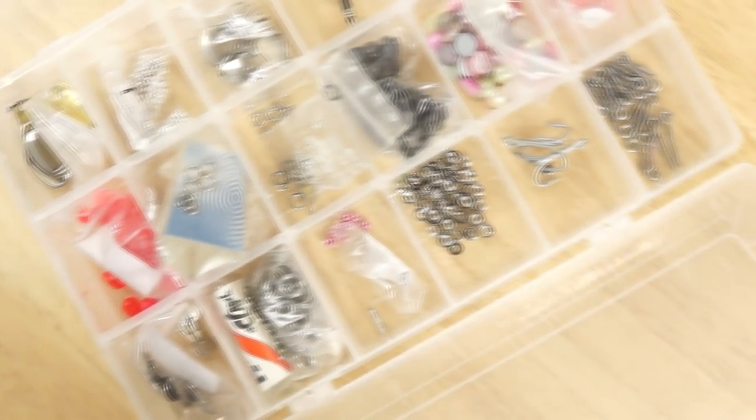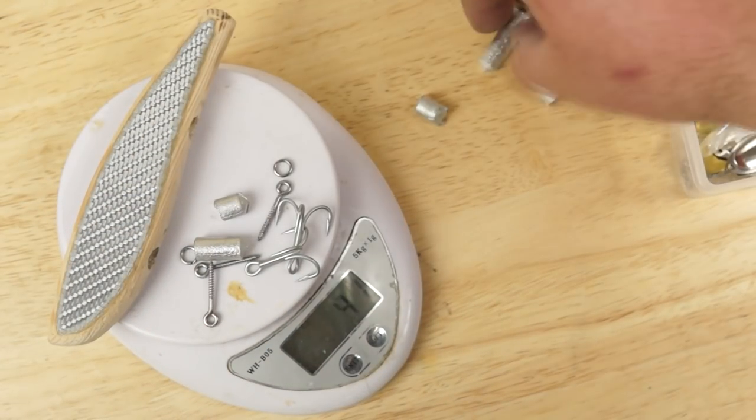Adding hooks and hardware like screw eyes and split rings will increase the weight without affecting the volume too much, but for the real bulk I'm using pewter slugs.